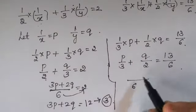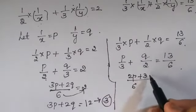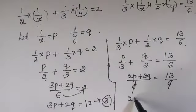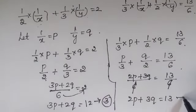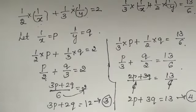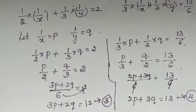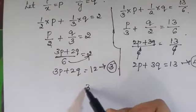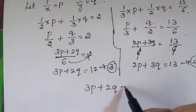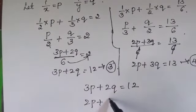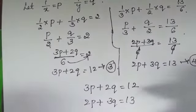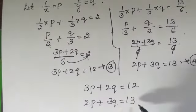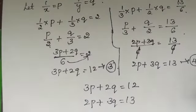Now simplifying the second equation similarly with LCM 6: 2p plus 3q equals 13 divided by 6. Cancelling the 6's gives 2p plus 3q equals 13 — let this be equation number 4. To get p and q, I will use the elimination method. In these two equations, no terms can be directly cancelled by multiplying just one equation.